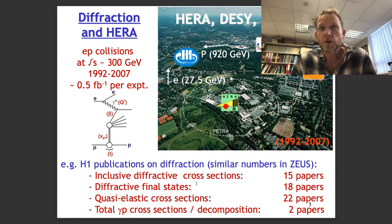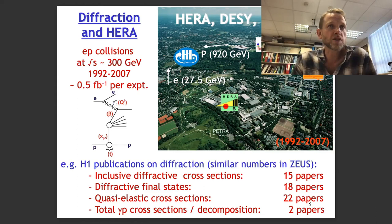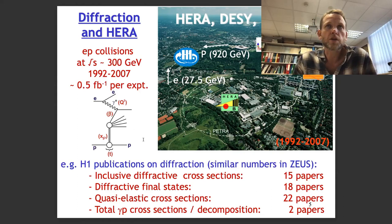The H1 publications cover: inclusive cross sections — basically any case where the proton stays intact; diffractive final states, looking for jets, charm, and so on; quasi-elastic cross sections where the central system is just a single vector meson; and the total cross section in the photoproduction limit where Q² tends to zero. Altogether, more than 60 papers per collaboration on these sorts of topics.